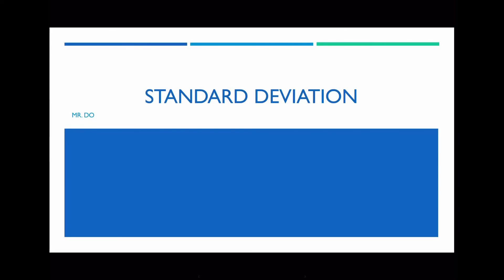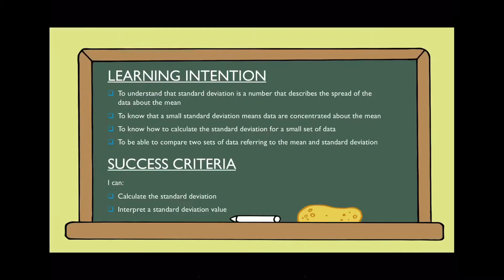Hello class. In today's video we're going to be looking at standard deviation. The learning intention is we're going to understand that standard deviation is a number that describes the spread of data from the mean, to know that a small standard deviation means data are concentrated about the mean, to know how to calculate the standard deviation for a small set of data, and to be able to compare two sets of data referring to the mean and standard deviation.